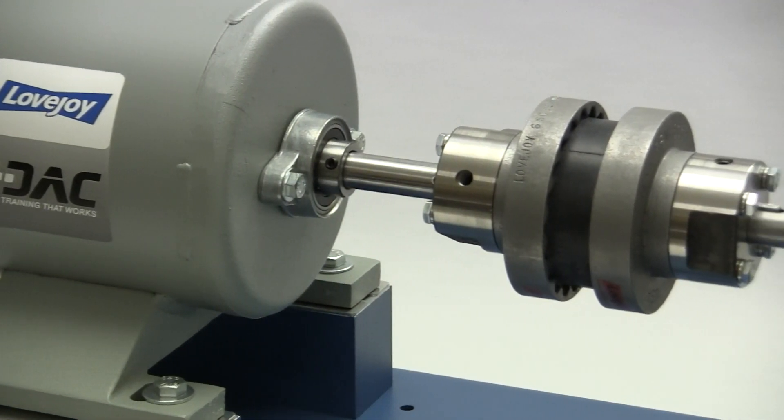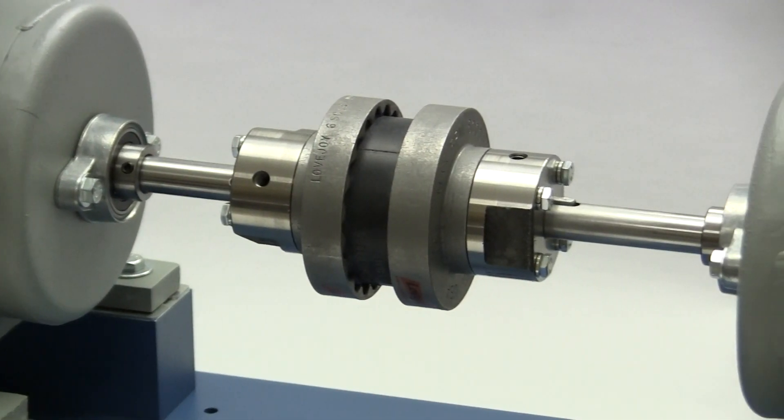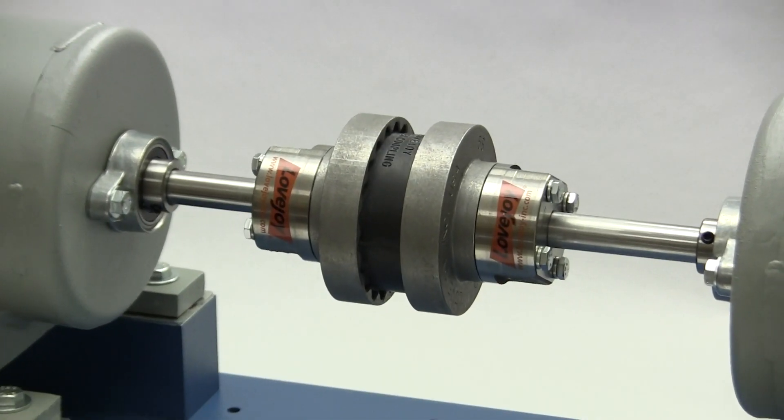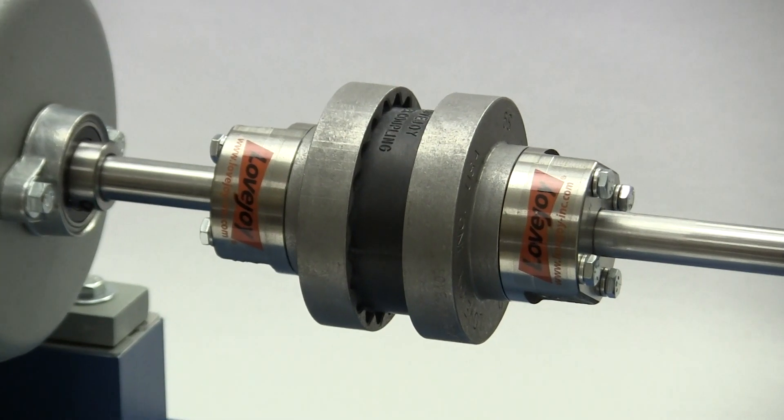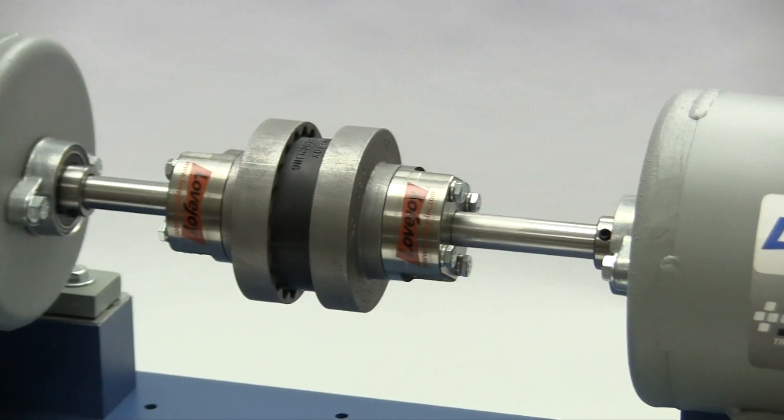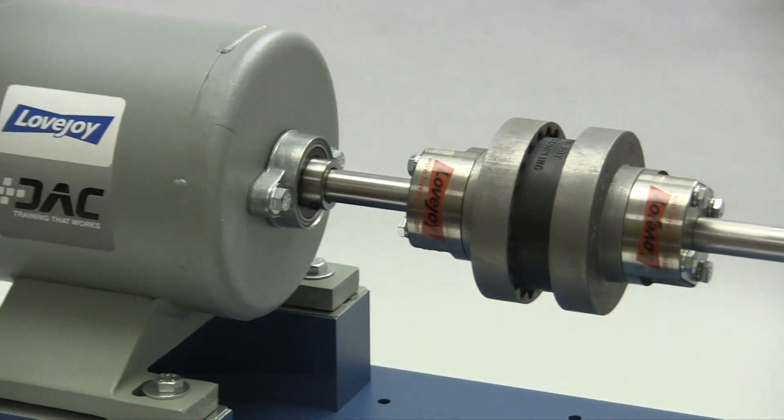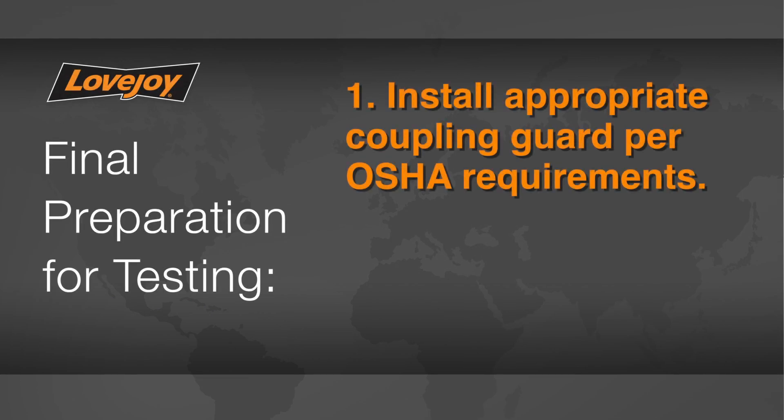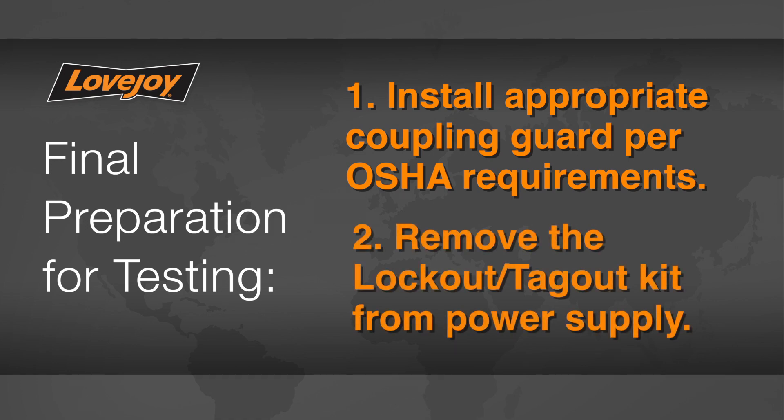When the installation is complete and the equipment is aligned to meet specifications, remove tooling and material away from the shafting and coupling. Double-check the set screw and spacer bolt tightness, then prepare for testing. Install the appropriate coupling guard per OSHA requirements and remove the lockout tagout kit from the power supply.